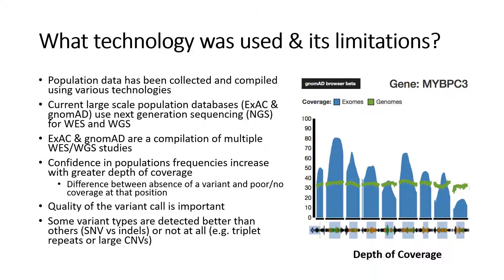As we discussed with population size, higher depth of coverage, or the number of reads that cover a certain position, increases the confidence in the data at that position. It is important to distinguish between when a variant is absent due to poor or no coverage at the position versus a variant that has good coverage and is truly absent. The figure on the right illustrates how coverage may differ across several exons in the MYBPC3 gene, and how some exons have high coverage while others have much lower coverage. Anything below 20x coverage is generally considered to be in the low coverage range.